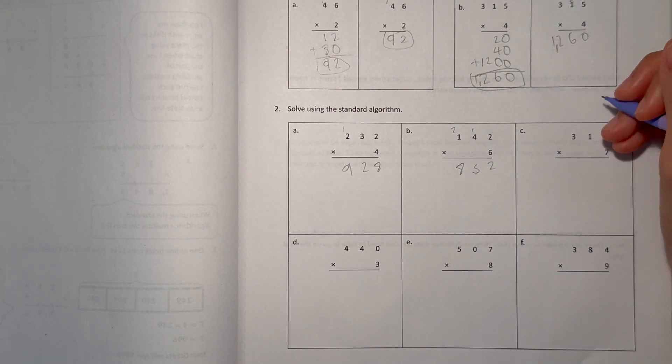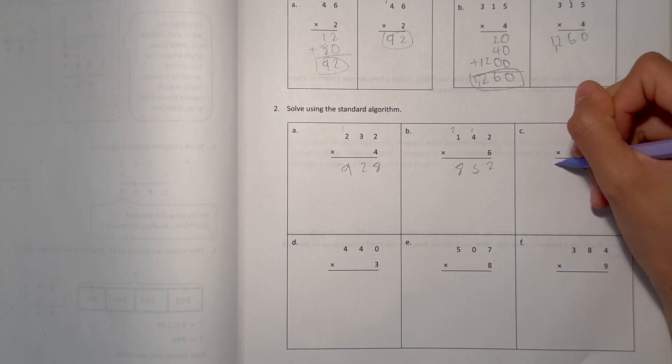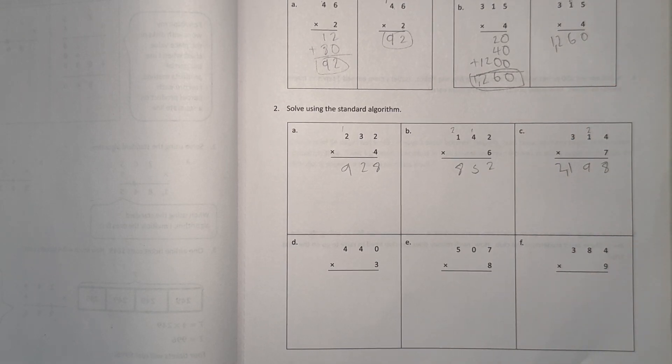Now C, 4 times 7 is 28, 1 times 7 is 7, plus 2 is 9, and 3 times 7 is 21, so 2,198.